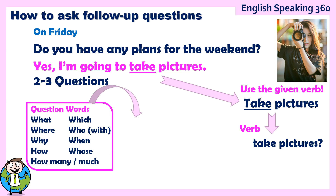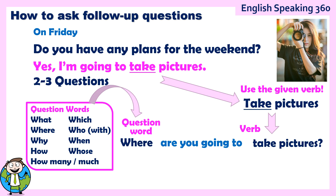For example, you're going to say where. Where take pictures is okay because the person can understand you, but it's not very good. If you want to make a perfect question, you need: Where are you going to take pictures? This is a good question.